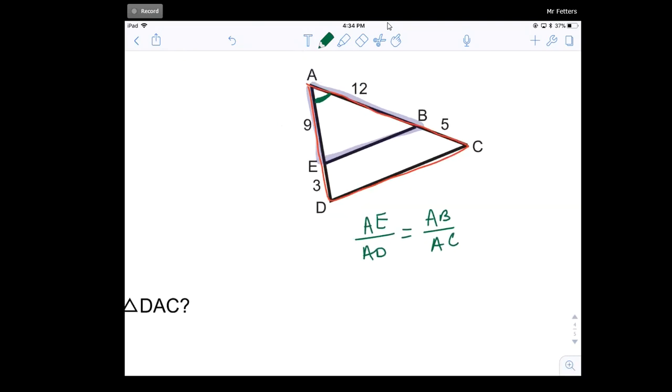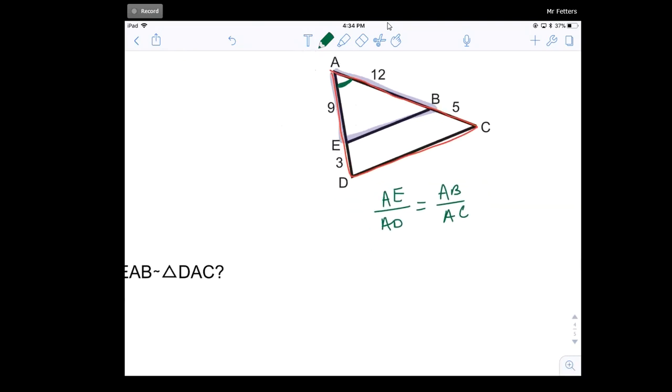So to do this here, I can say side AE is nine, and side AD is nine plus three, which is 12. Is that equal to 12 over AC, which is 12 plus five, which is 17.